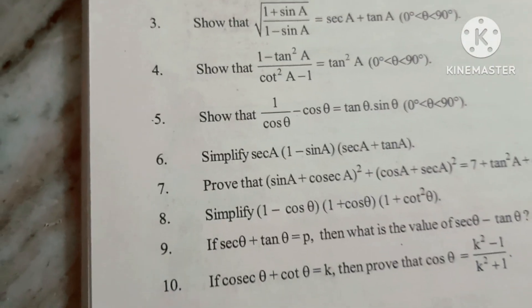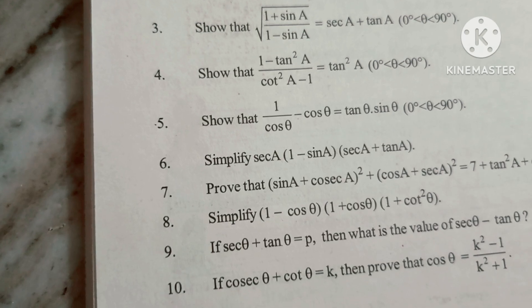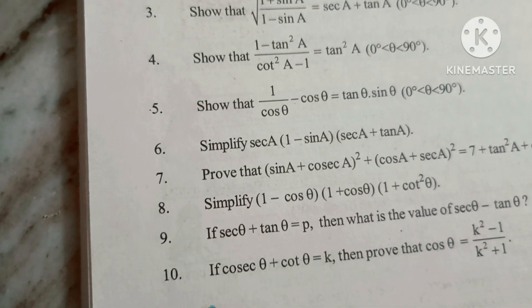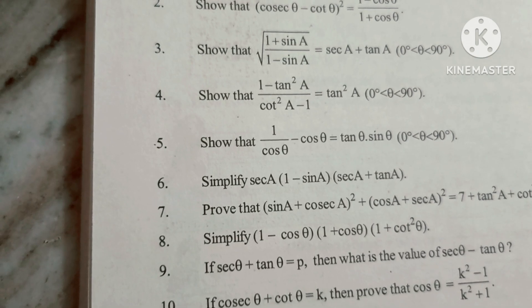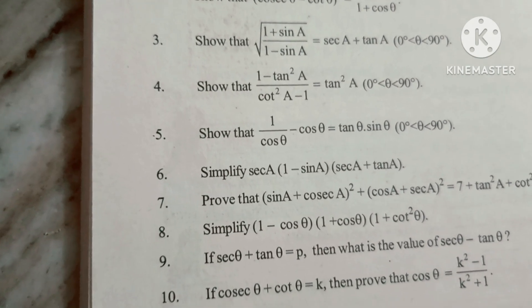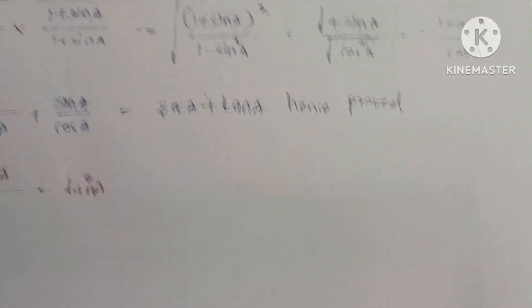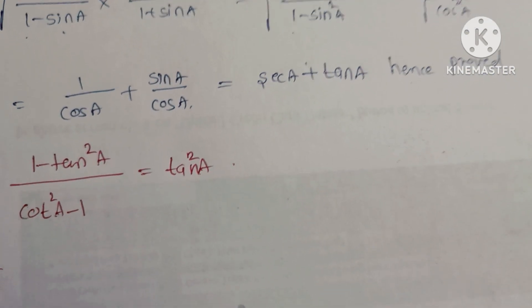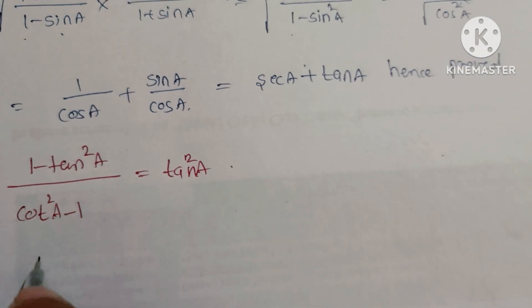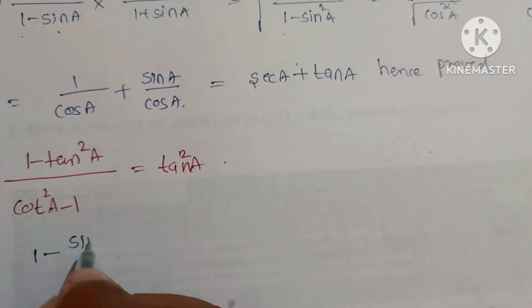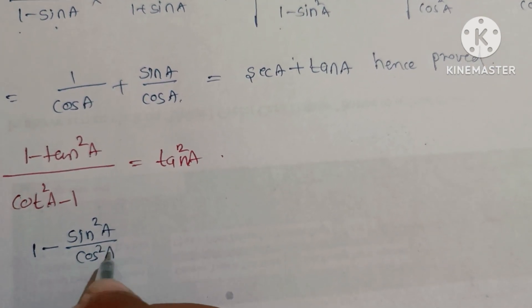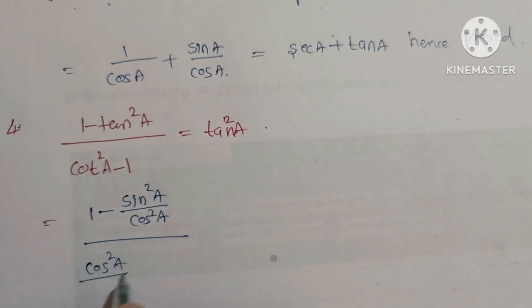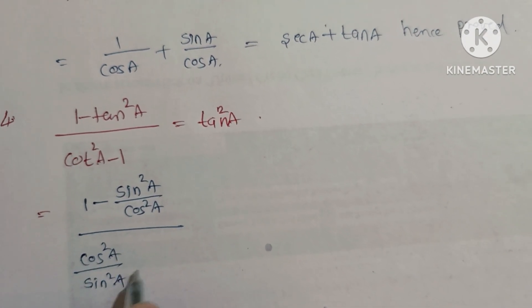Problem 4: Show that (1 - tan²θ)/(cos²θ - 1) = tan²θ. Write 1 - tan²θ = 1 - sin²θ/cos²θ = (cos²θ - sin²θ)/cos²θ. Denominator cos²θ - 1 = -sin²θ.